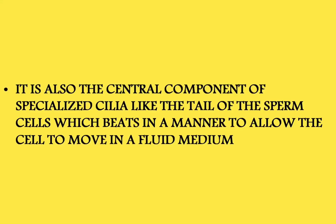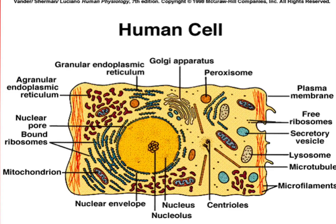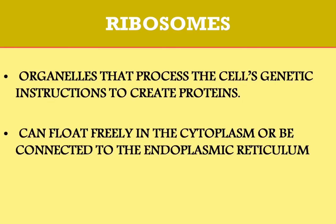The microtubules are the central component of cilia — small hair-like projections that protrude from the surface of certain cells. They are also the central component of specialized cilia, like the tail of sperm cells, which beats in a manner to allow the cell to move through a fluid medium.